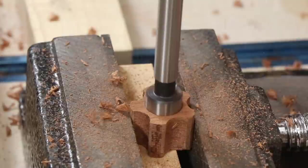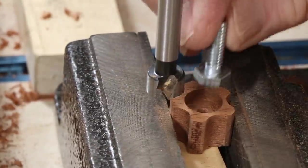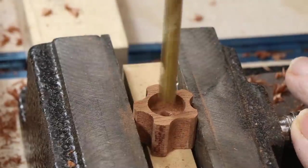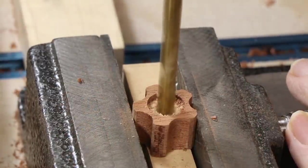I countersunk a recess for the bolt head. Here I'm just measuring to be sure the recess is deep enough to accommodate the head. Then I drilled a smaller hole through the lower part of the knob that was a snug fit for the threaded shaft of the bolt.